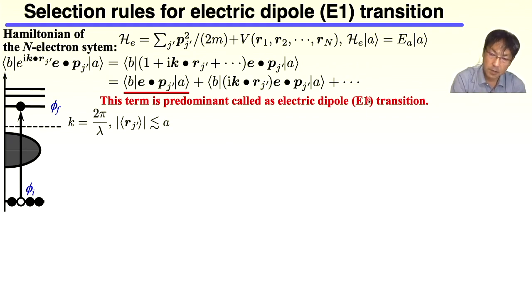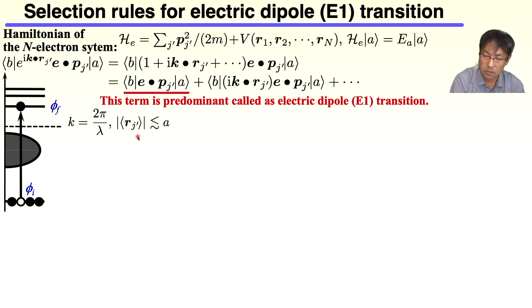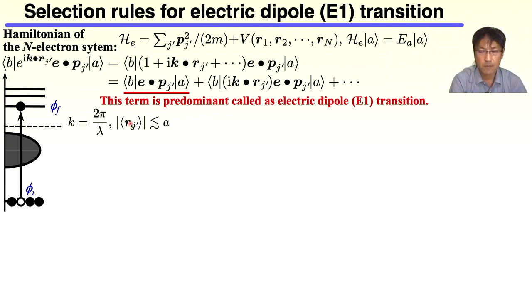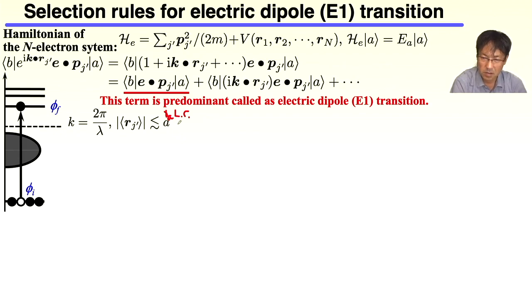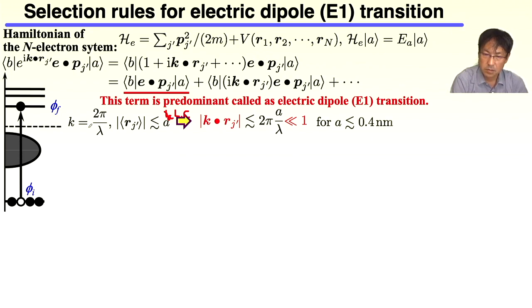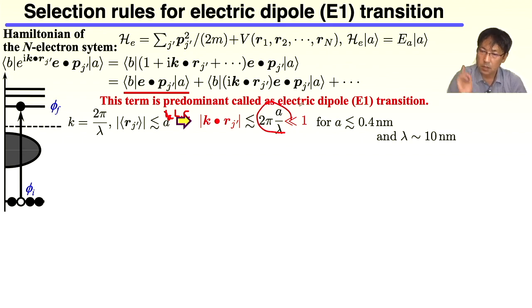We can evaluate the exponential function e^(ikR) like this. K is the wave number, inversely proportional to the wavelength lambda. Here, R stands for the moving distance of the electron around the atom. Therefore, the mean value of Rj is less than the lattice constant A. Note that this A is different from the vector potential — this A is the lattice constant. Then, the K dot R is evaluated as this value. The question is whether this value is much larger than 1 or much smaller than 1.